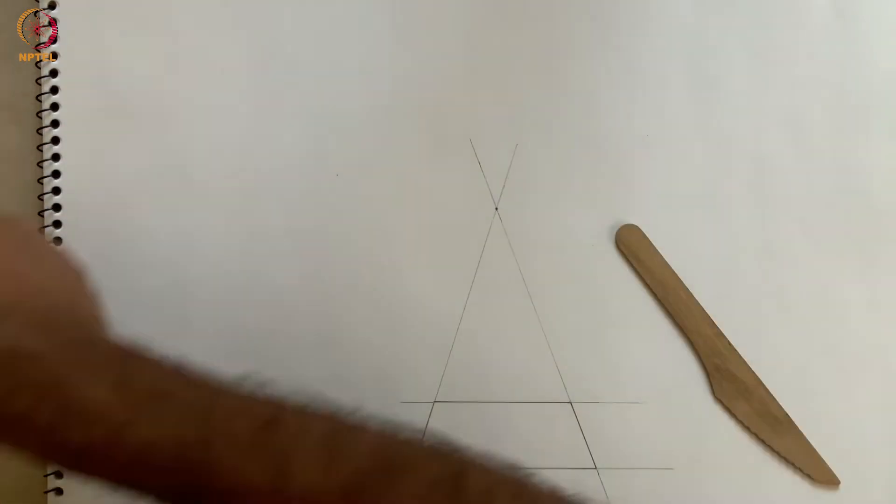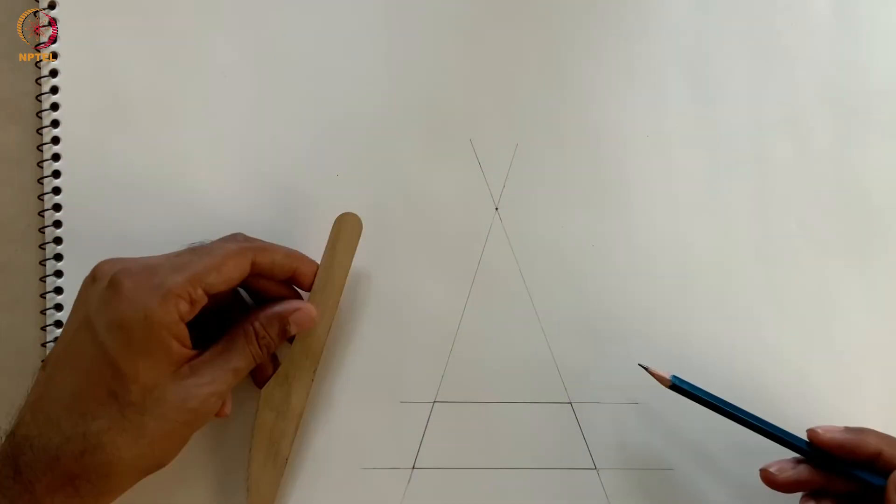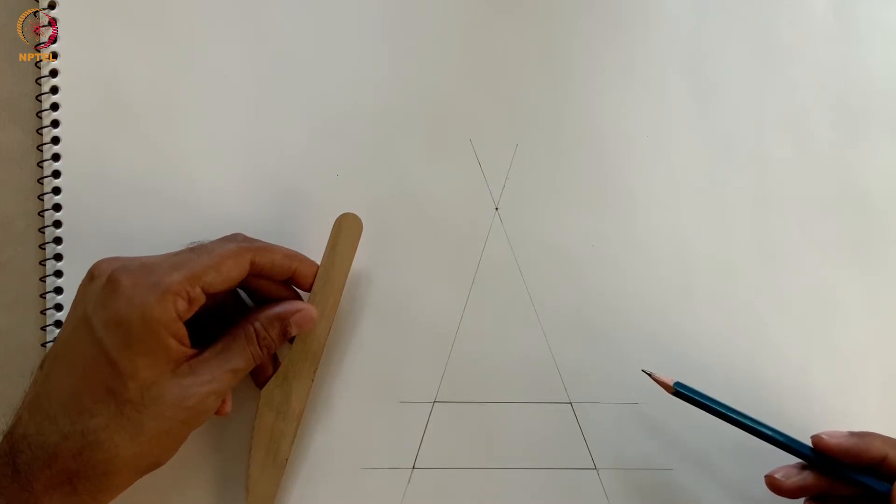There's very little we can actually do. We have just one, two, three, four, five points. Do you see any points that have not yet been connected by a line?